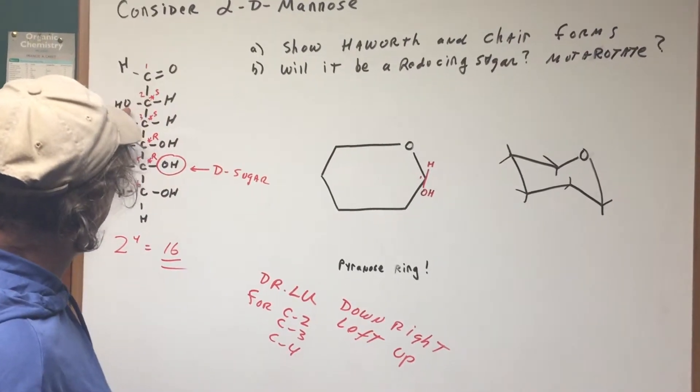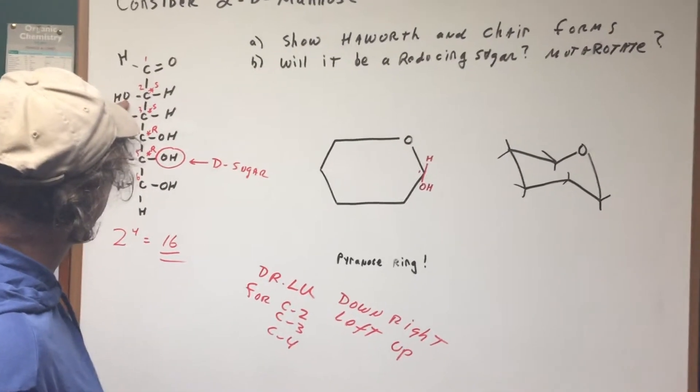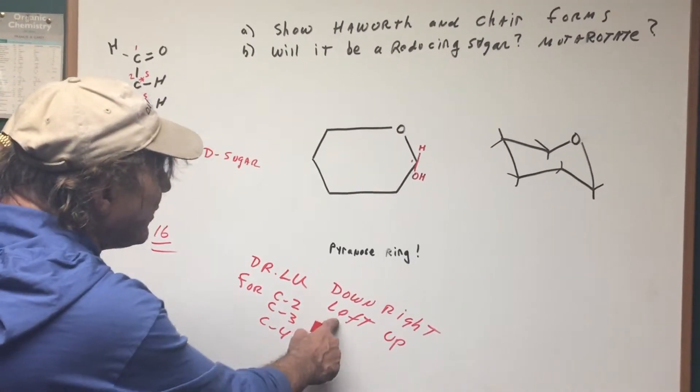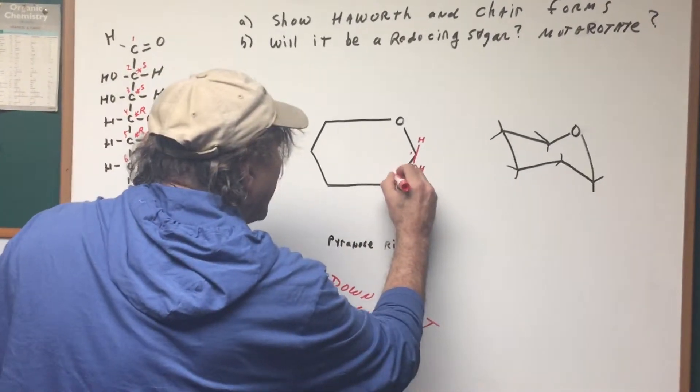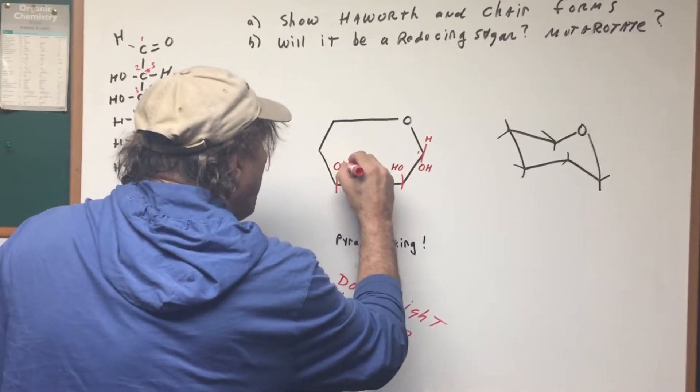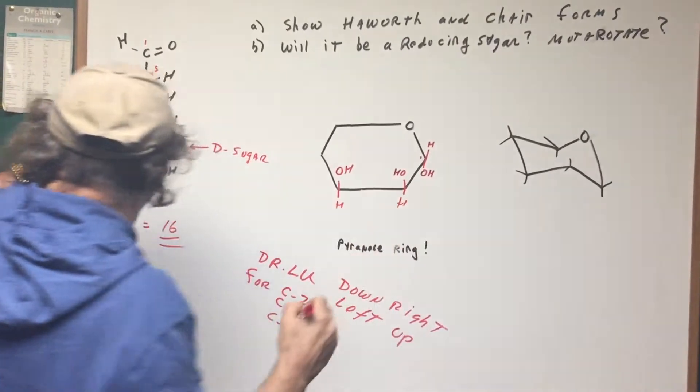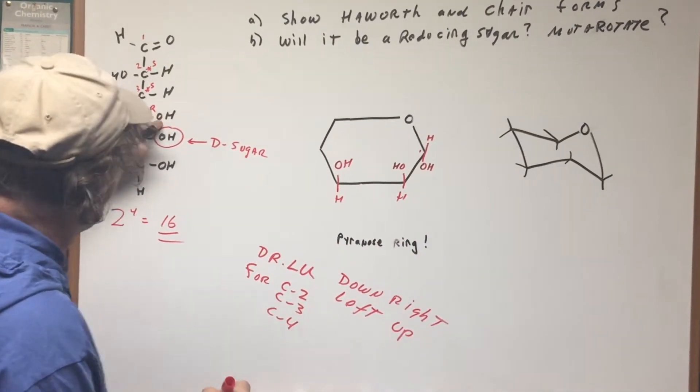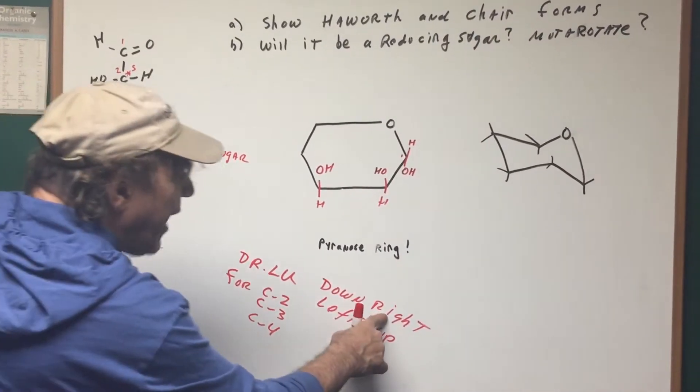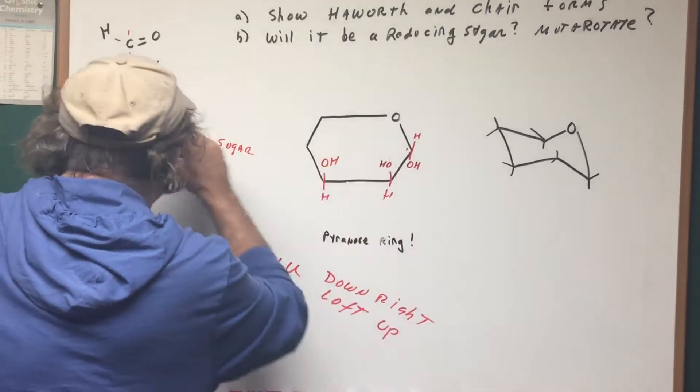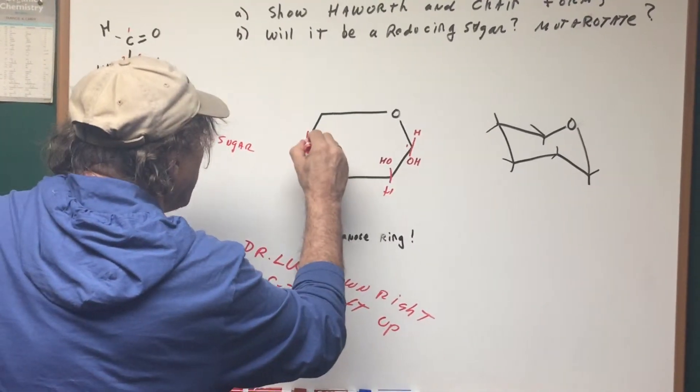The next thing is I look at carbon two, and I look at carbon three, they're both on the left. Left is up. So what I do is I go up, up, and now we go to carbon four. Carbon four, the OH is down. Down means right. So because it's on the right, means you're going to push it down.